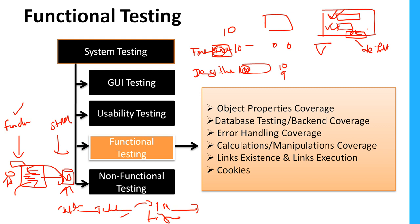As part of database testing we cover both functional and structural aspects. For the functional part we do all DML operations — insert, update, delete, and select — and verify whether data is properly affecting the database. For the structural part we validate triggers, stored procedures, functions, table relationships, and more.